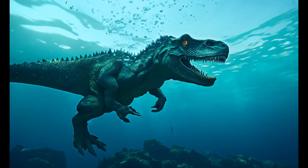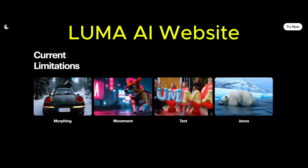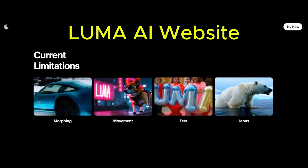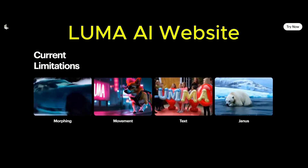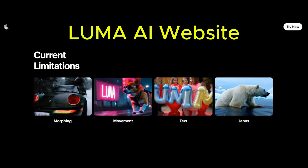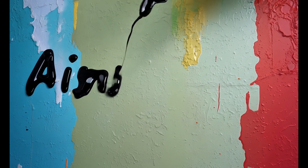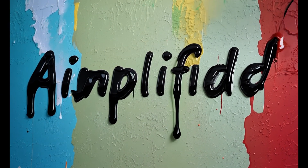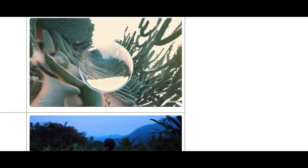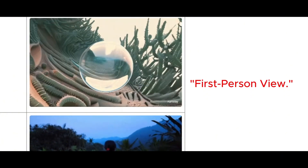My conclusion so far, based on this video and other creators' feedback: similar to Luma AI model limitations, we see morphing, movement, and Janus issues. I also tested text generation — my YouTube channel name 'AI Simplified' is misspelled here. Based on the Runway website and other creators, some of the strongest applications of the Gen 3 model involve first-person view videos.